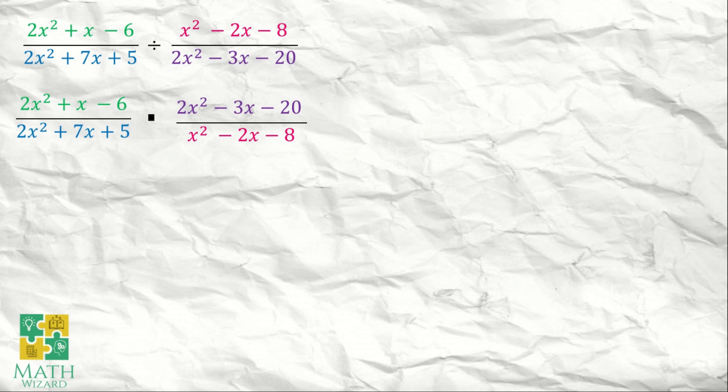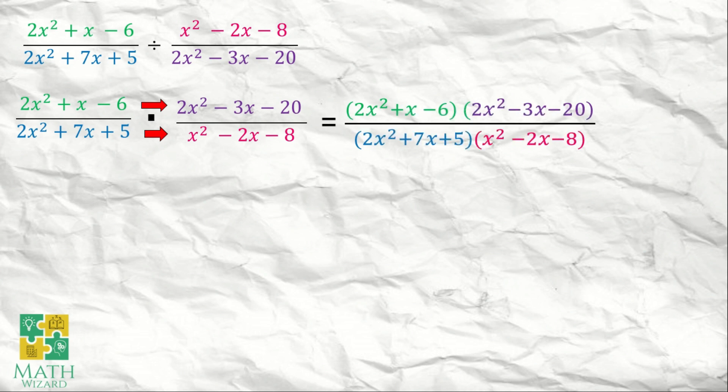So we need to multiply — numerator times numerator, denominator times the denominator. We have the quantity of 2x squared plus x minus 6, times the quantity of 2x squared minus 3x minus 20, over the quantity of 2x squared plus 7x plus 5, times the quantity of x squared minus 2x minus 8.